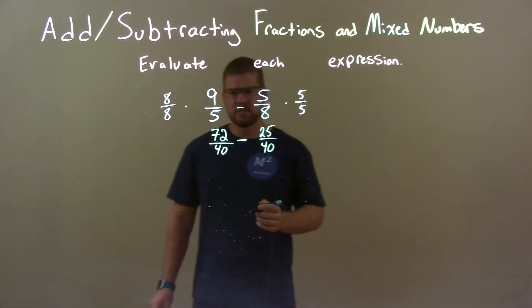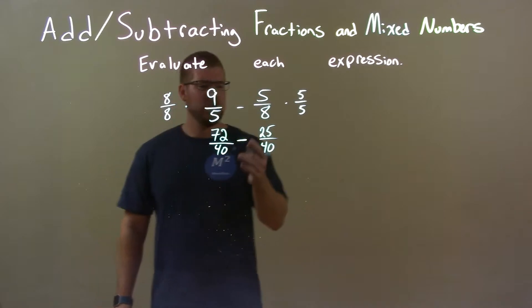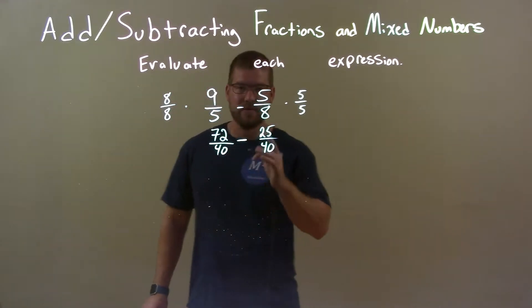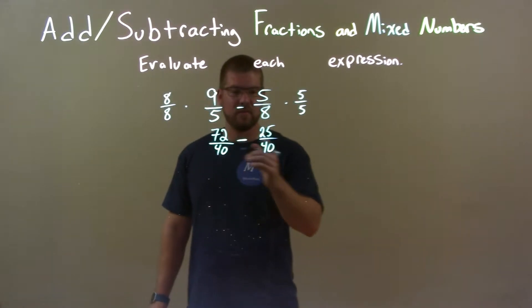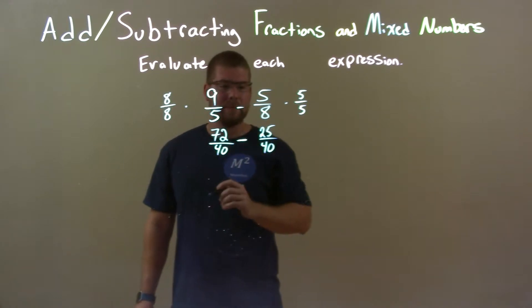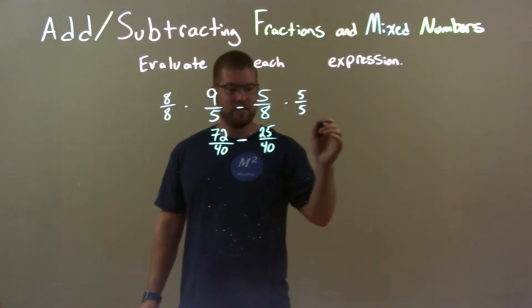Okay, so now we have 72 over 40 minus 25 over 40. Well, they have the same base. Since they have the same base, we just have to worry about subtracting the numerator. So 72 minus 25, well that gives us, I believe it's 47.